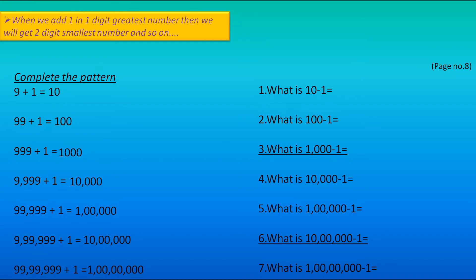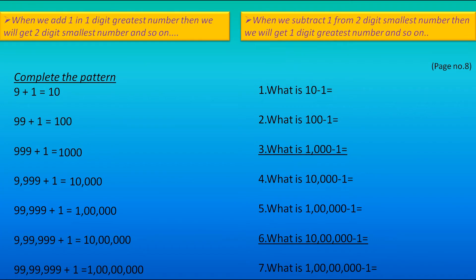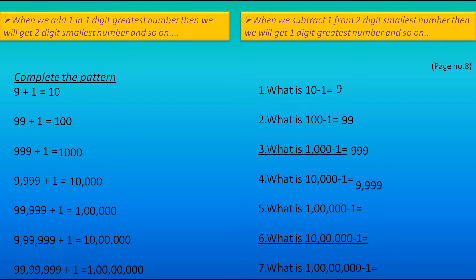In the next question, they are asking: what is 10 minus 1? Before answering this, understand that when we subtract 1 from a 2-digit smallest number, we will get the 1-digit greatest number, and so on. In the first question, the 2-digit smallest number is taken and from that we subtract 1 — we get the 1-digit greatest number. Same way, here the 3-digit smallest number has 1 subtracted from it, so we get the 2-digit greatest number. Same way, here we get the 3-digit greatest number, here the 4-digit greatest number, then the 5-digit, 6-digit greatest number, and so on.